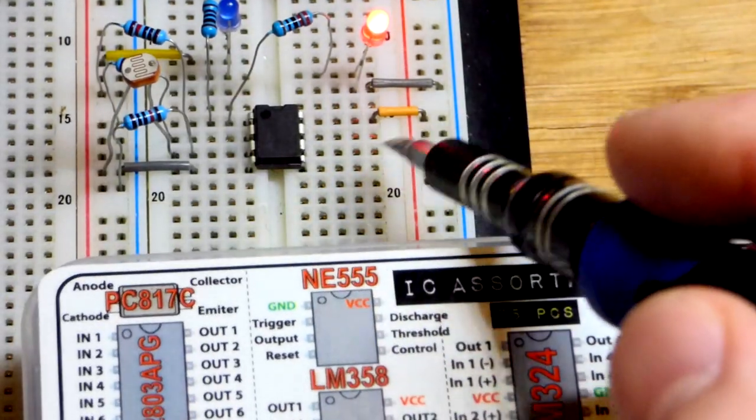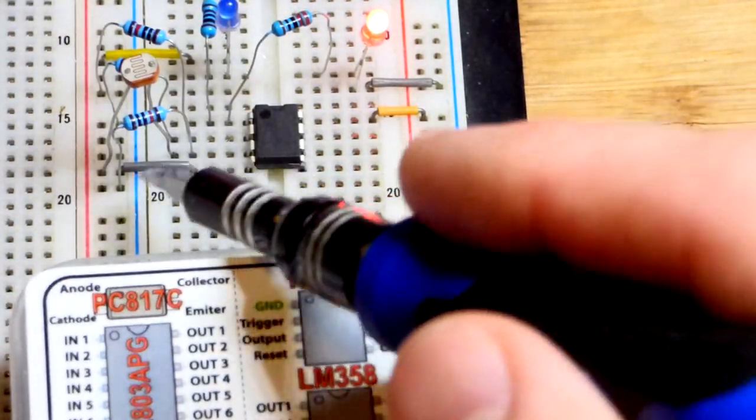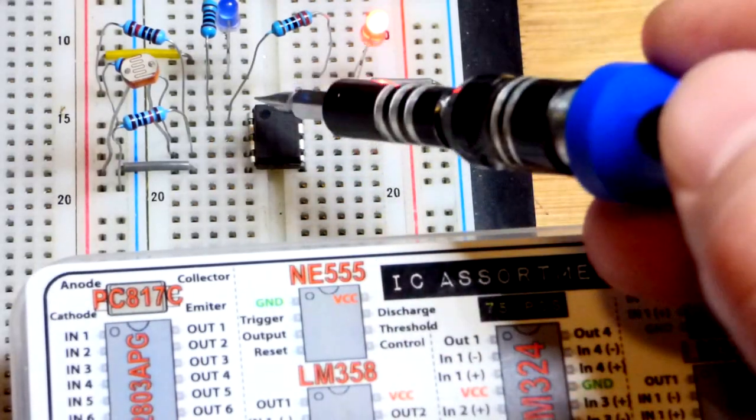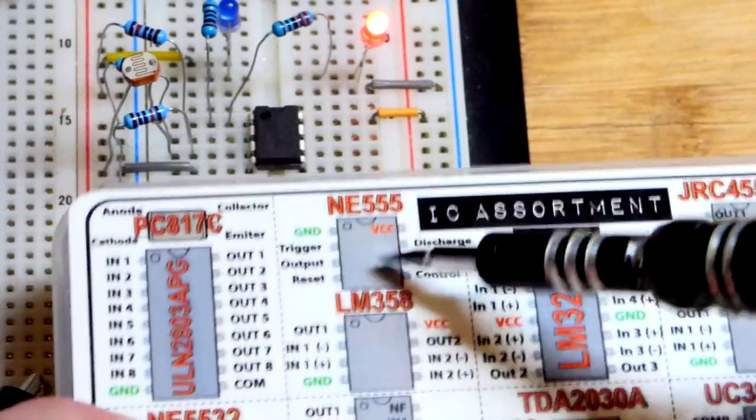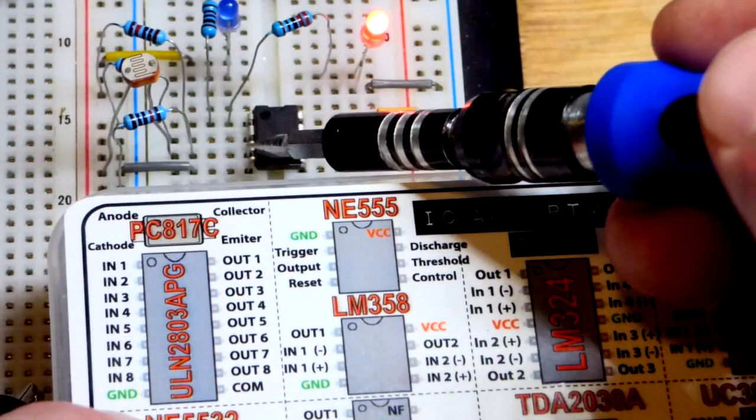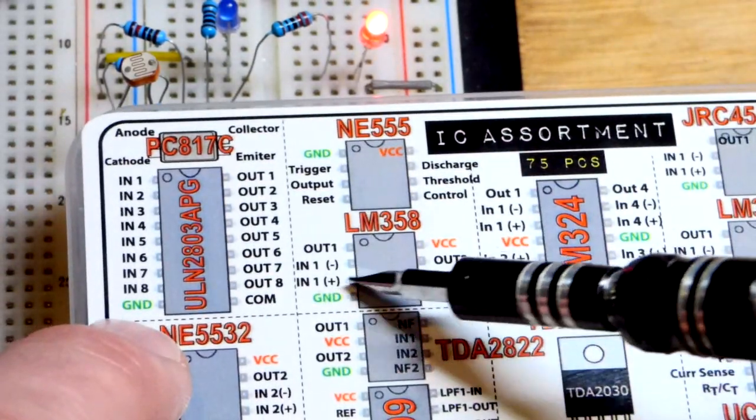You can see that little divot right there. The top pin right there is our output. The pin below that is our inverting input. And the pin below that is our non-inverting input.